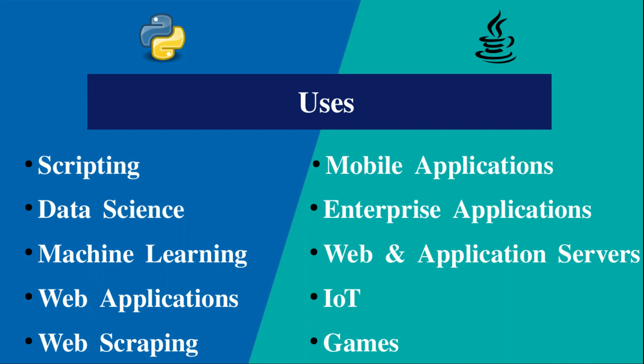Now we have some similarities between Python and Java. Both are platform independent — they run on Linux, Mac, and Windows. Java and Python both use a virtual machine. Both support machine learning and Artificial Intelligence, with library support for ML. Python is also widely used for artificial intelligence and data science.